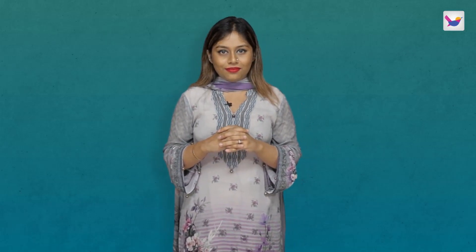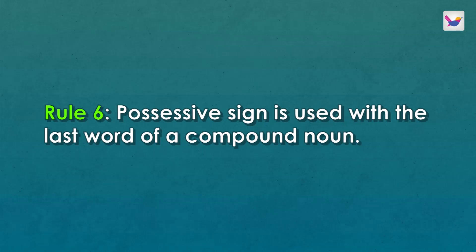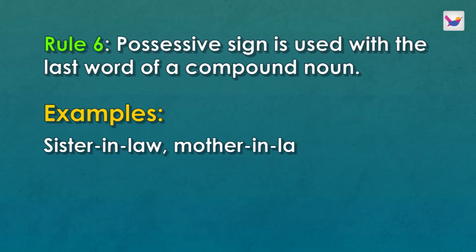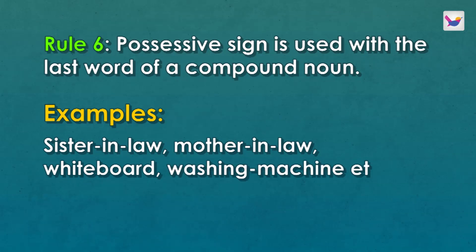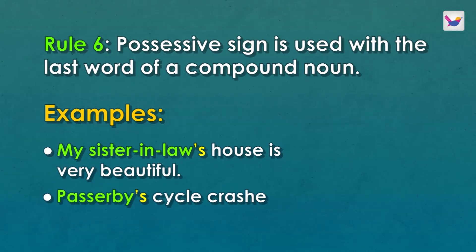Some words come from one unit or one single word — this is a compound noun. For example: sister-in-law, mother-in-law, whiteboard, washing machine, etc. When a compound noun shows possession, we use apostrophe S at the end of the entire compound. For example: my sister-in-law's house is very beautiful. Similarly, we would apply this to a compound noun like passer-by.